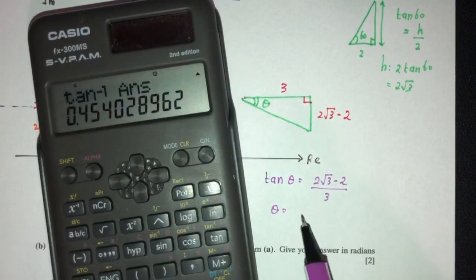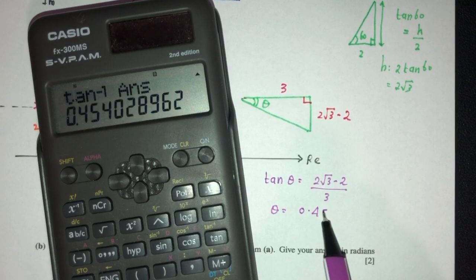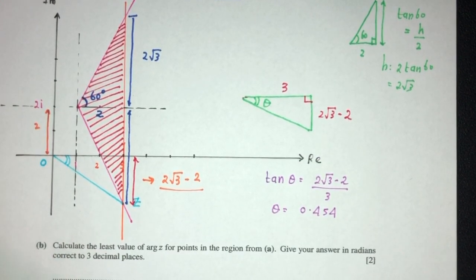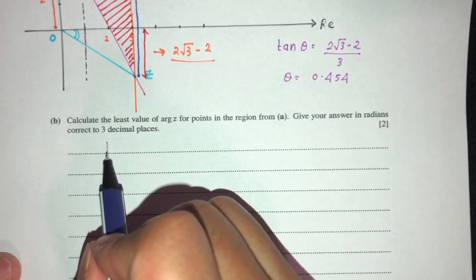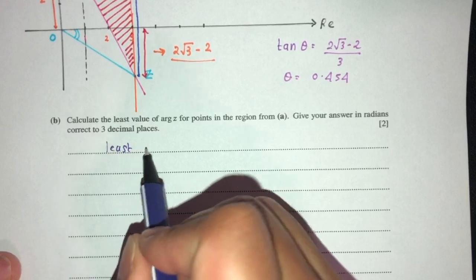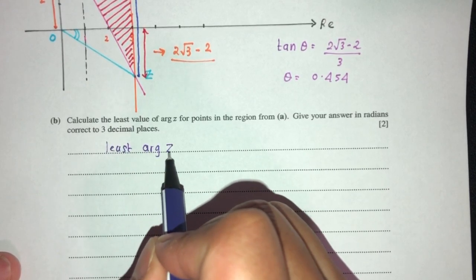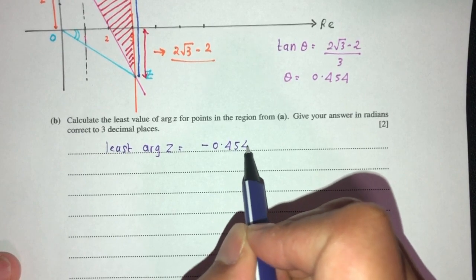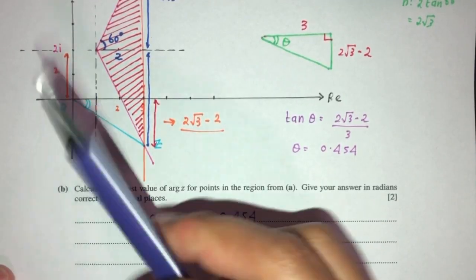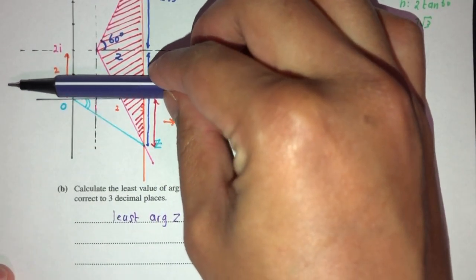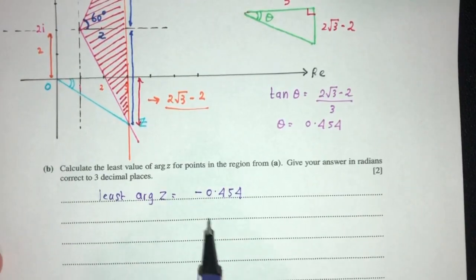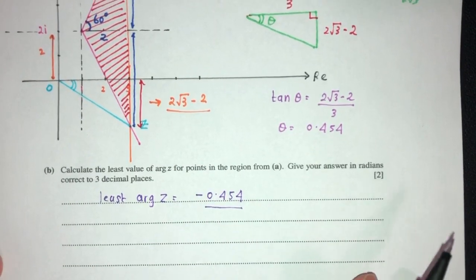That would be the value of 0.454. This is just the angle theta, but the answer should be the least argument. Since the angle is below the real axis, we always describe it as a negative direction. So the least argument of Z is minus 0.454.